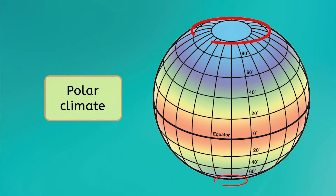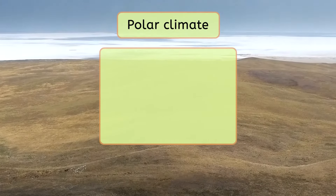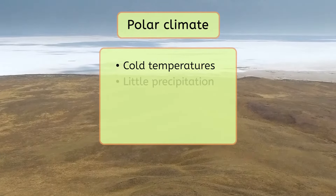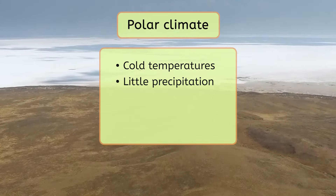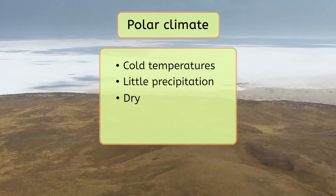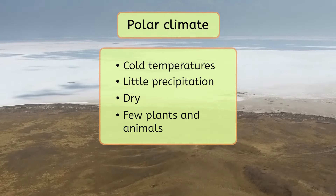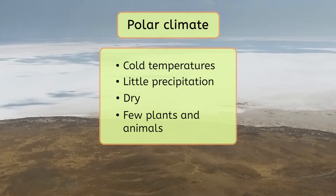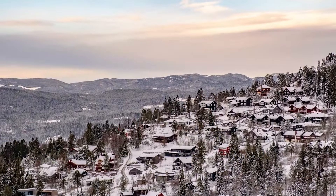The farther from the equator we go, the colder the climate gets, until we eventually hit the polar regions. Polar climates are found near both poles of the planet. They have extremely cold temperatures and get very little precipitation throughout the year. In fact, many places in polar regions are technically deserts, just with dry and cold weather instead of dry and hot. Not many plants and animals can live in these frigid places, but if you don't mind the cold, it might be the climate for you. Juneau, Alaska and Oslo, Norway both have a polar climate.